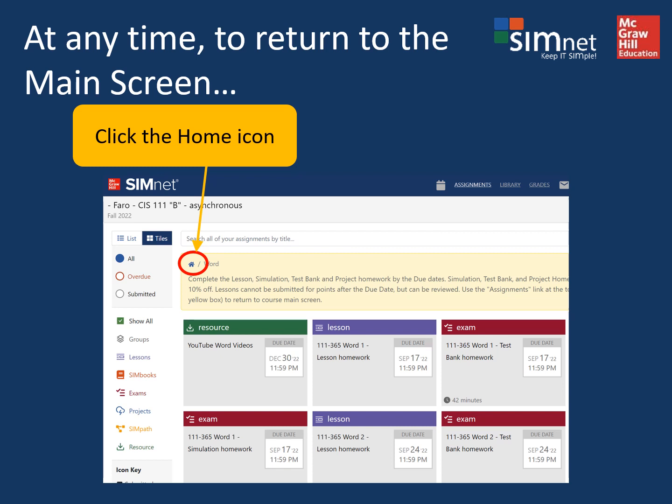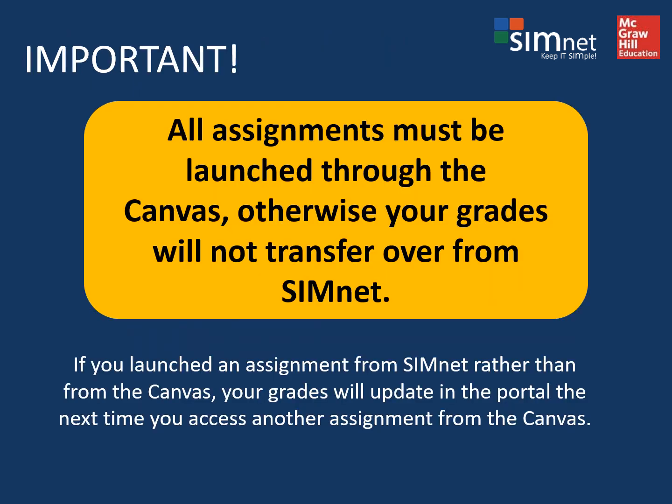If you've clicked around and need to return to the main screen in SimNet, click the tiny home button or click the SimNet logo in the upper left corner. Remember to only start assignments by opening them from Canvas — this way, when you complete the assignment, your grades will link back from SimNet and also display in Canvas.